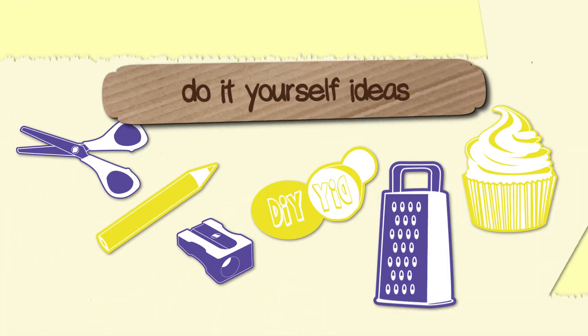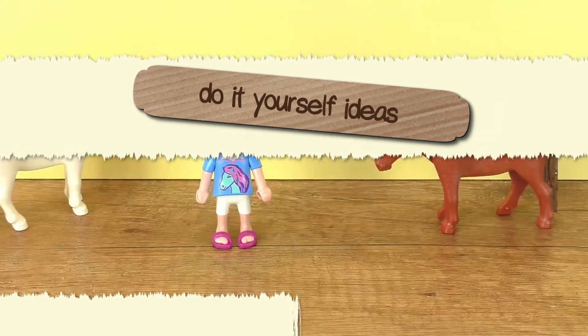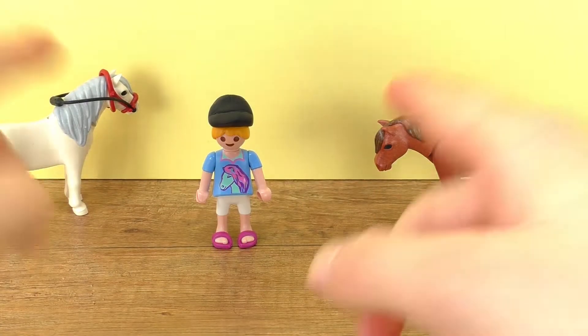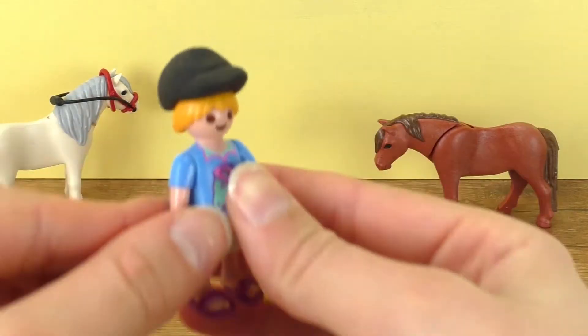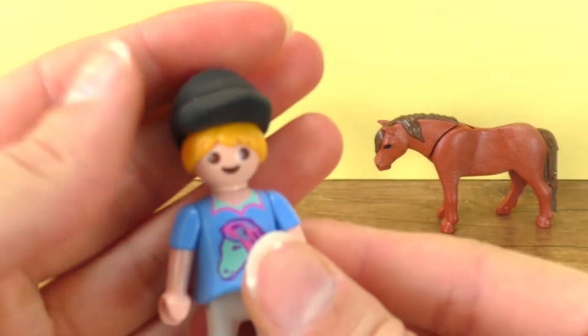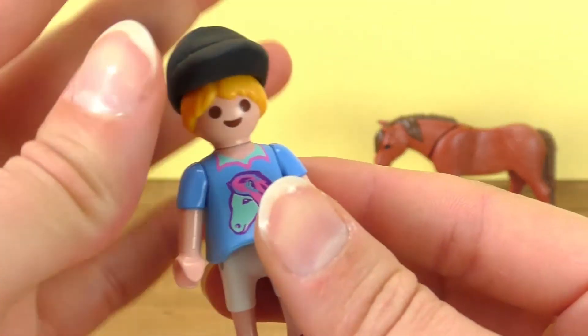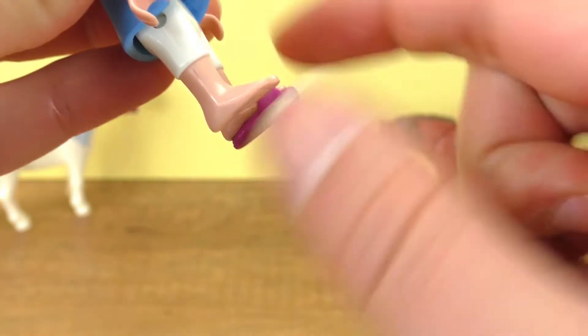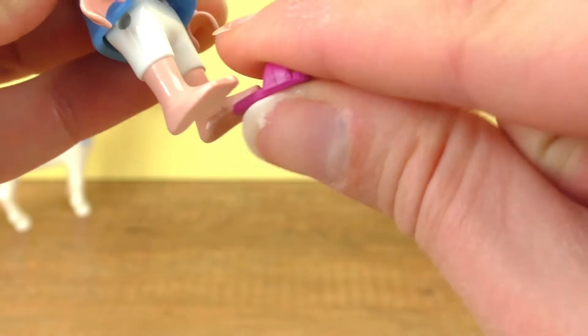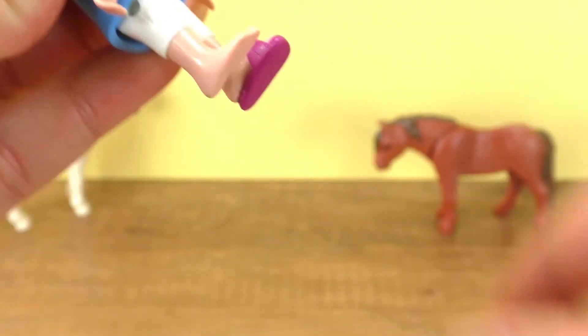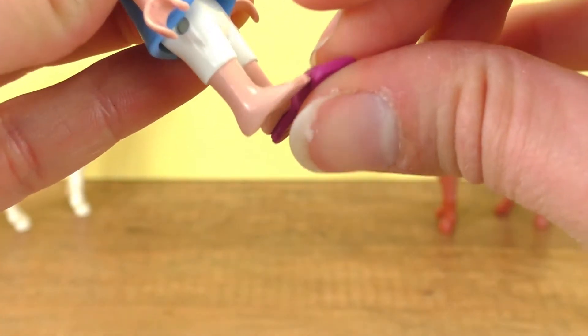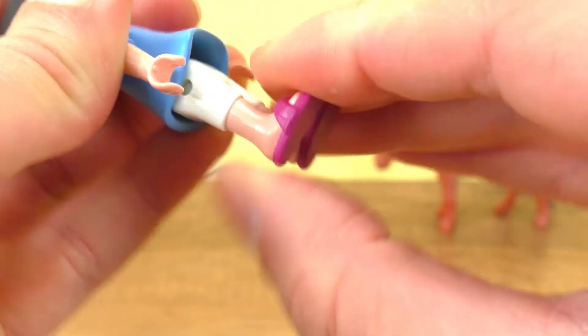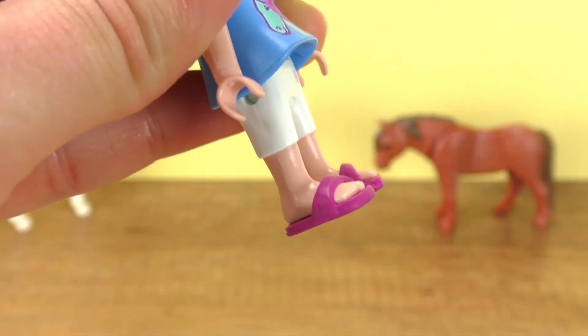Hello everyone and welcome to a new video from DIY Ideas. Today I have our little Playmobil Hannah. Last time we made her a little riding cap, but now our problem is she just has these little slippers that are not good for riding horses. It's good for summer which is coming, but not for riding. So today we are going to make her some riding boots.